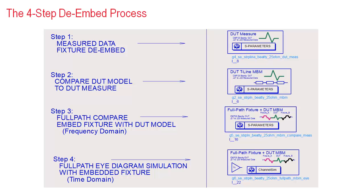Simulation tools make it easy to implement this four-step process of step one, removing the fixture from the measured S-parameter data. Step two, of verifying and calibrating the DUT simulation with the DUT measurement. Step three, of embedding the fixture back with the DUT model for comparing with the full-path fixture plus DUT measurement in the frequency domain. And then finally step four, demonstrating how a digital waveform simulation can match with measurement.